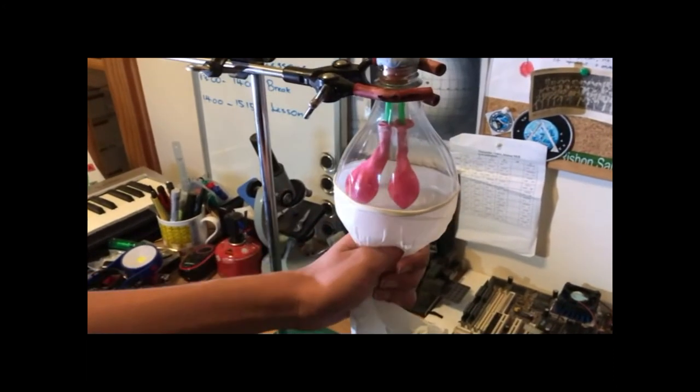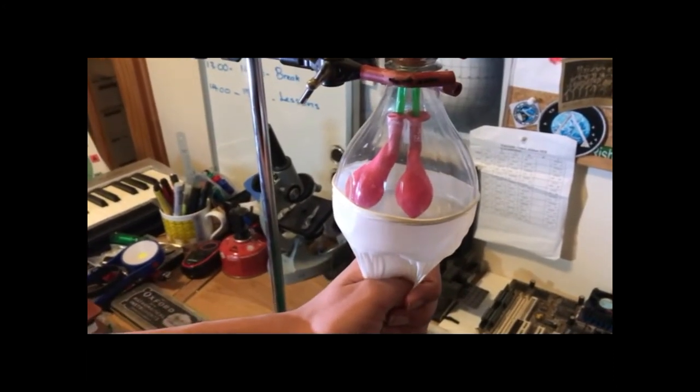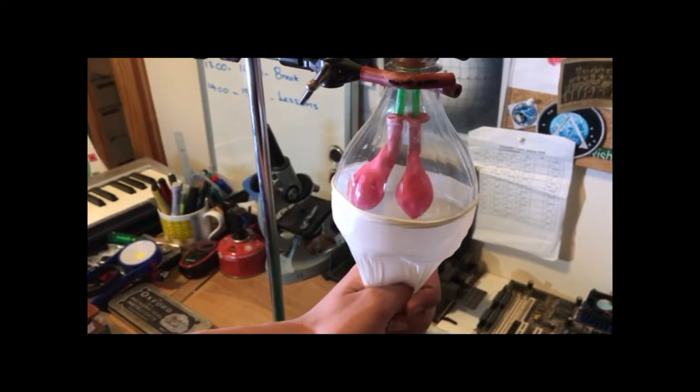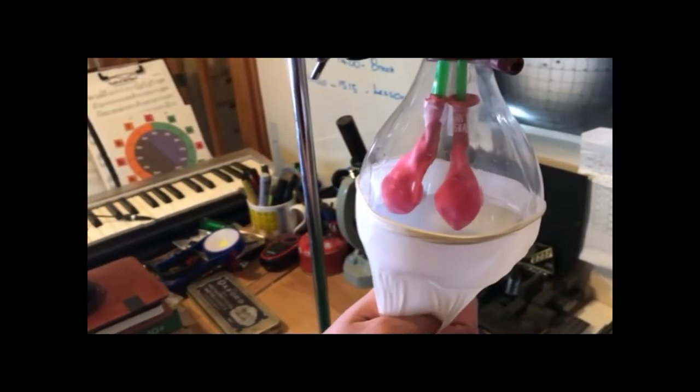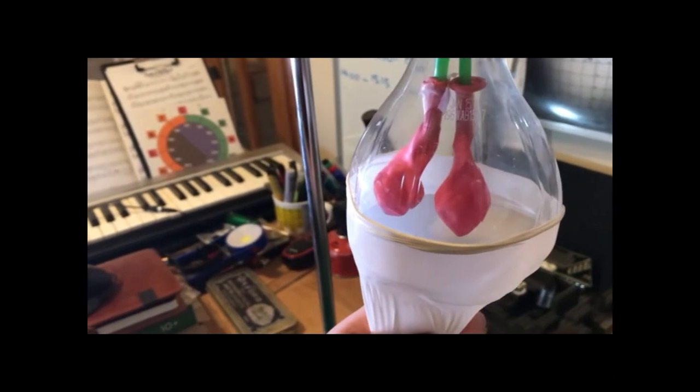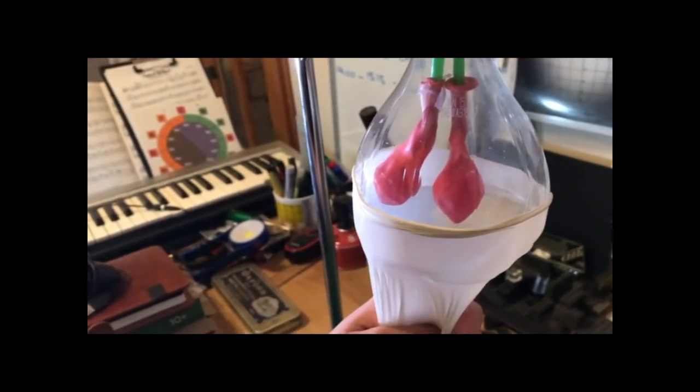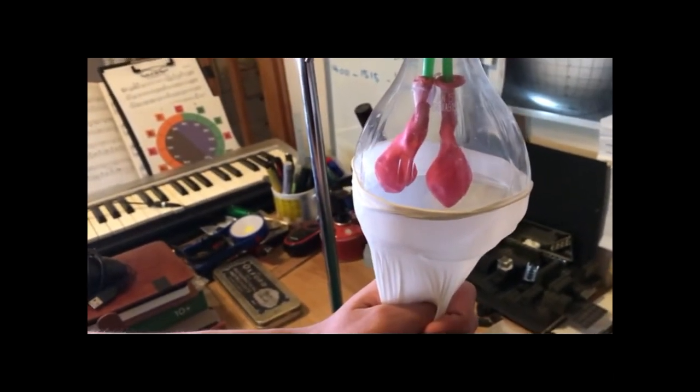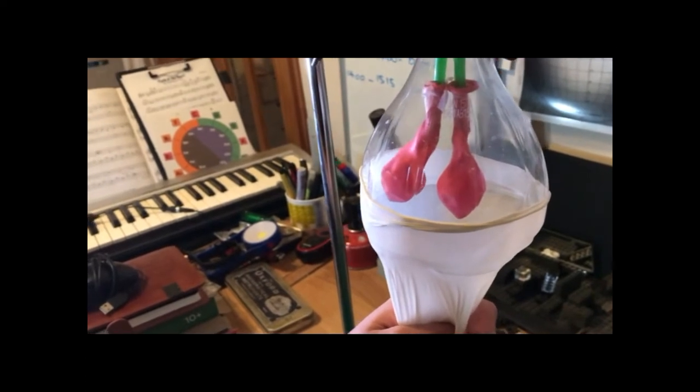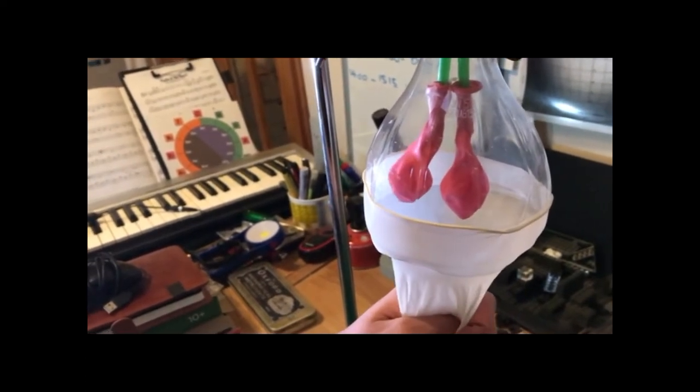Just like the lungs in our bodies, when the diaphragm, in this case the glove, contracts and moves downwards, the pressure in our lungs decreases because of the volume increase. As a result, air rushes into the lungs.